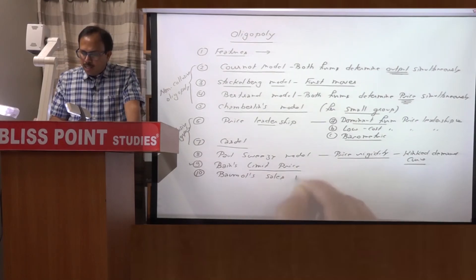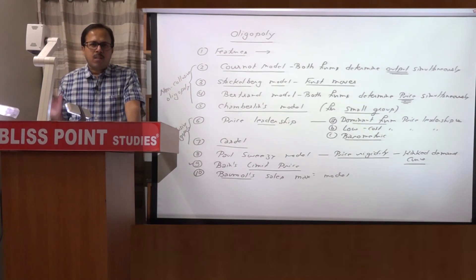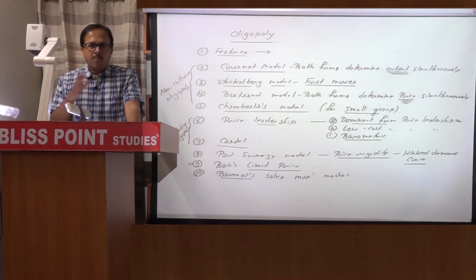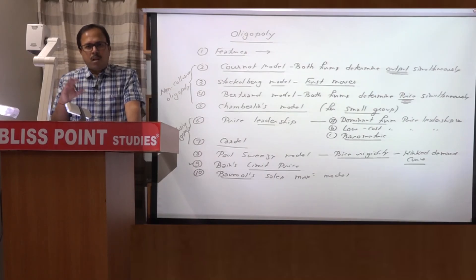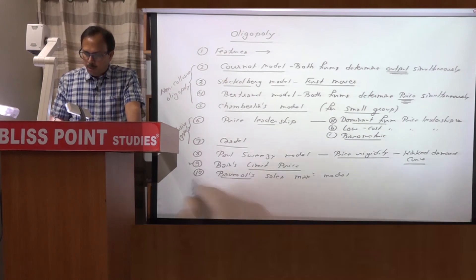The tenth topic is Baumol's sales maximization model. The reason we study sales maximization here is that in oligopoly, ownership and management get separated — owned by large numbers of shareholders and managed by professionals whose objectives differ. So there may be a conflict between profit maximization and sales maximization, and we study what Baumol explained as the main aspects of the sales maximization model.